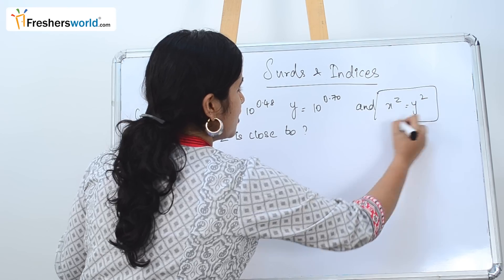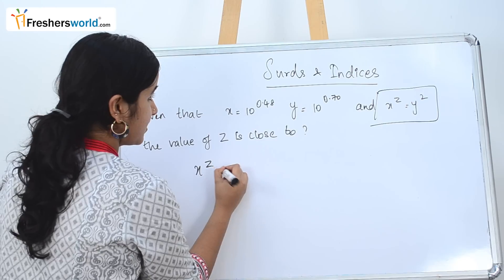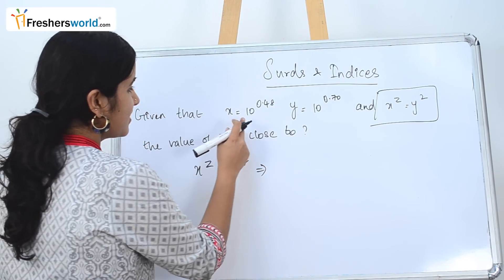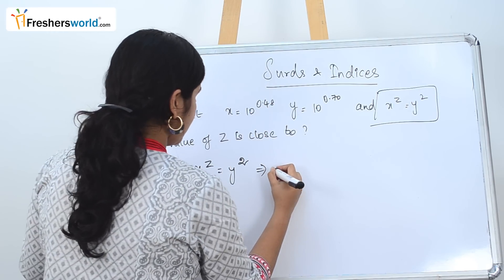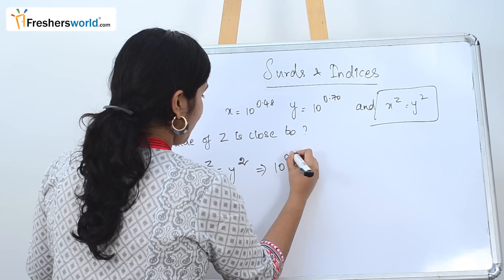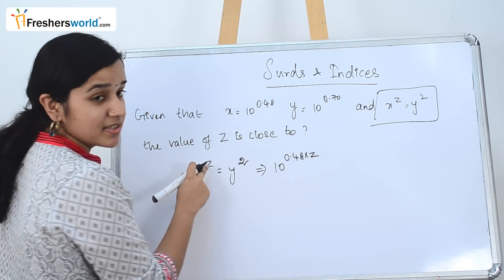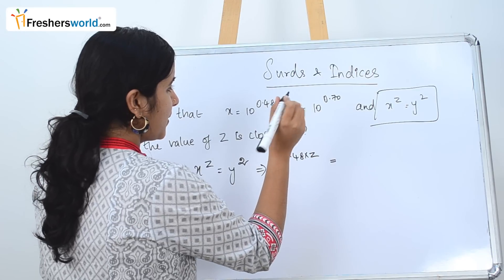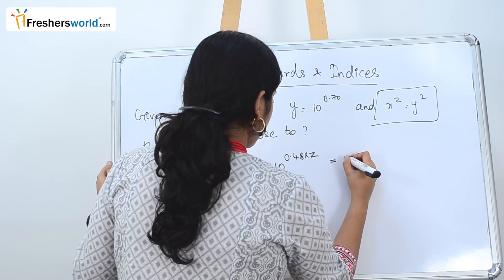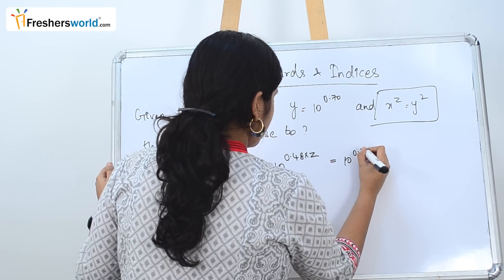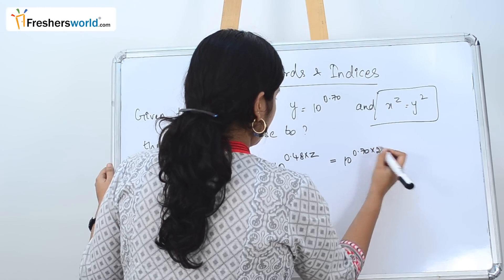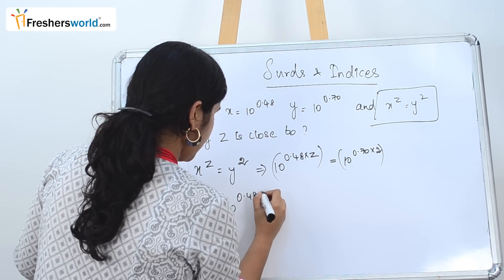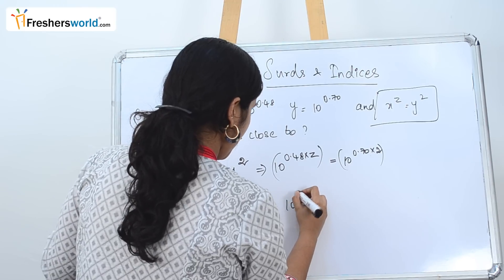With this equation, let's find the value of z. x power z is equal to y square. Let's substitute the values we know. x is equal to 10.48, so 10.48 into z is equal to y is equal to 10.70, which gives us 10.70 into 2. So 10.48 into z is equal to 10.70.